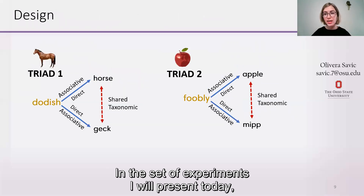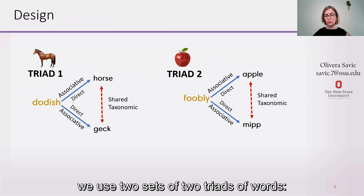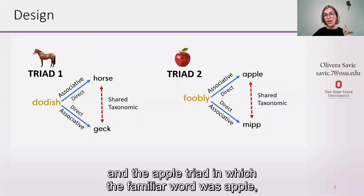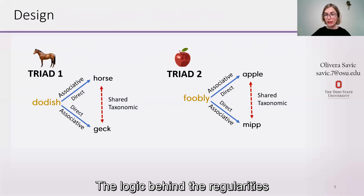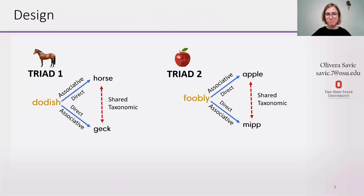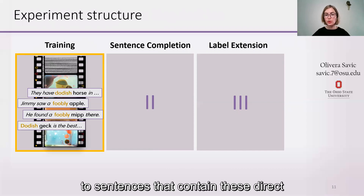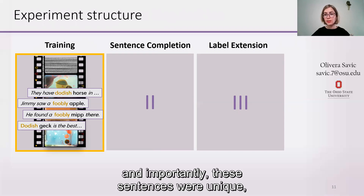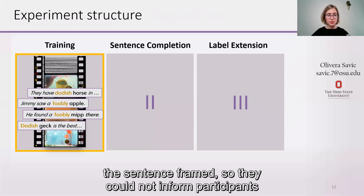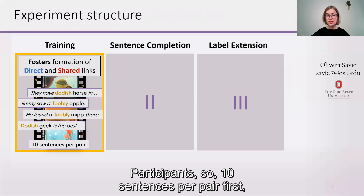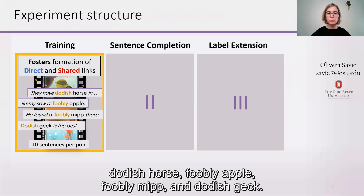In the set of experiments presented today, we used two sets of triads of words. The horse triad, where the familiar word was horse and novel words were dodish and gank, and the apple triad, in which the familiar word was apple and novel words were foobly and mip. The logic behind the regularities in these triads was the same. The experiment had three phases. In the training phase, participants were exposed to sentences containing direct and shared co-occurrence regularities. Importantly, sentence frames were unique so they could not inform participants in other ways about the relationship between the words. Participants saw ten sentences per pair of words.